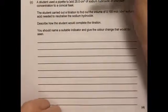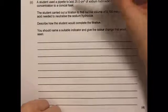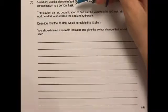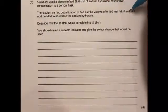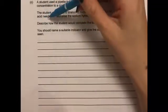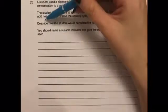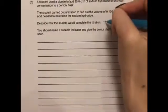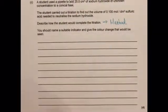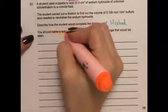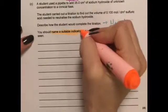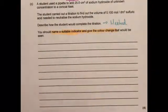A student used a pipette to add 25 centimetres cubed sodium hydroxide of unknown concentration to a conical flask. The student carried out a titration to find out the volume of 0.1 moles per decimetre cubed sulfuric acid needed to neutralize the sodium hydroxide. Describe how the student would complete the titration. So here they're looking for us to describe the method we would use to carry out that titration. Then they tell us you should name a suitable indicator and give the colour change that would be seen.